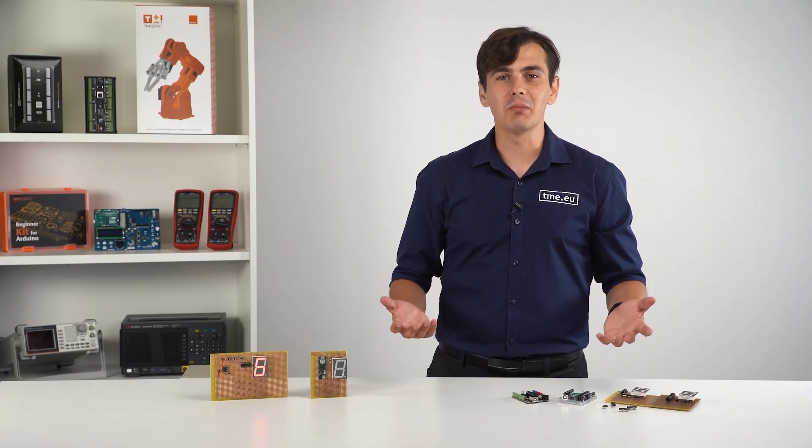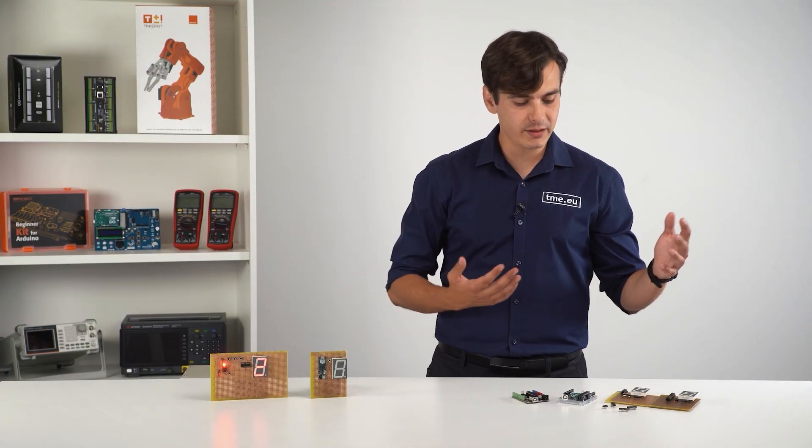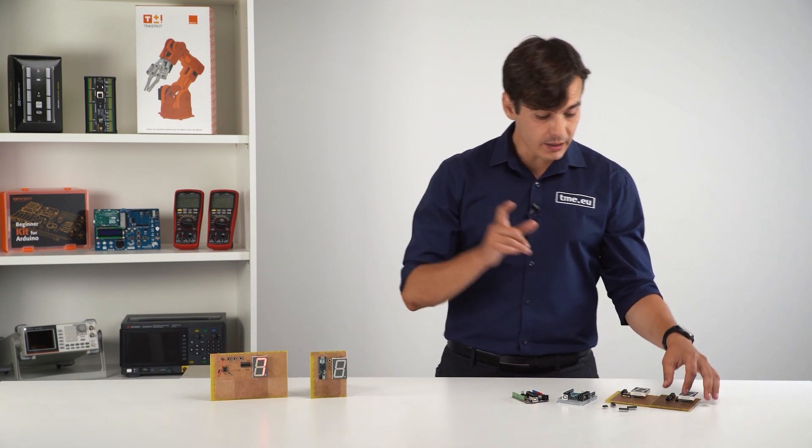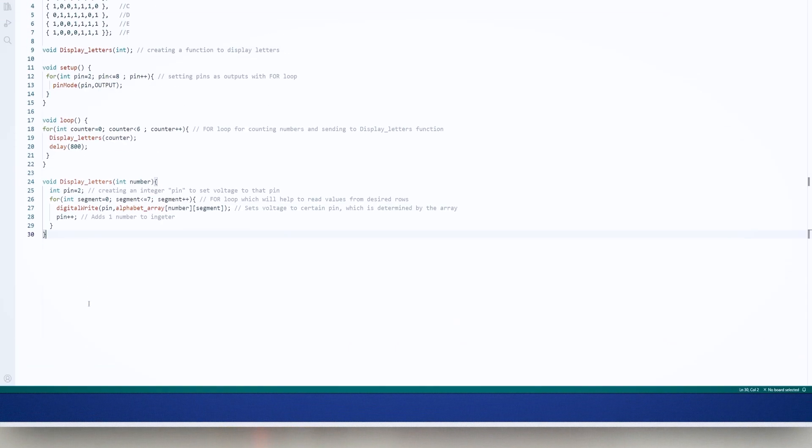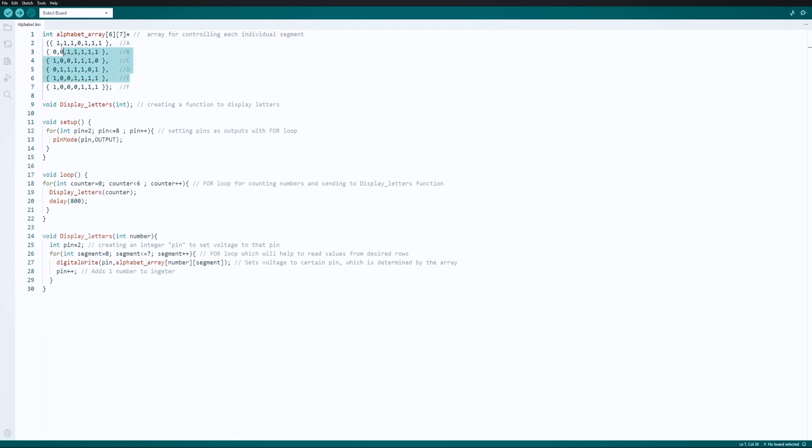But who wants to see only numbers? Even in math, you get more letters than numbers. So the next adjustment is to present the alphabet from A to F. In the circuit with the MCU, all we need to do is to change the code. We need to adjust the for loop and change the name of the number array to alphabet array. And that's all. It's quick and simple.